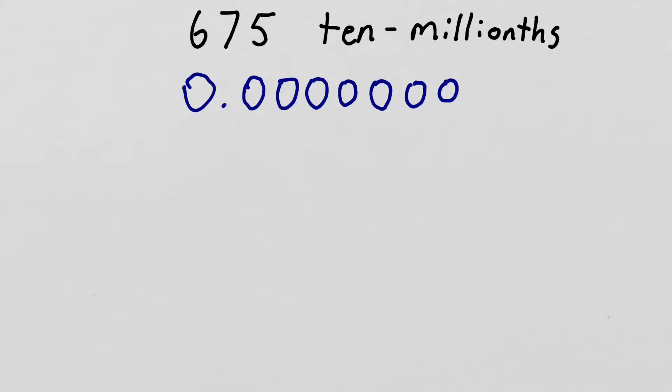Now this problem says that we have 675 ten-millionths. So we're going to start writing these backwards. So we get our 675 ten-millionths. Now I'm going to rewrite this so it's a little bit cleaner.